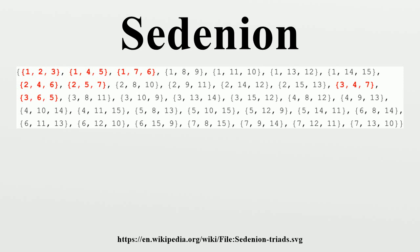Every Sedenion is a linear combination of the unit Sedenions E0, E1, E2, E3, ... E15, which form a basis of the vector space of Sedenions. Every Sedenion can be represented in this form. Addition and subtraction are defined by the addition and subtraction of corresponding coefficients, and multiplication is distributive over addition.